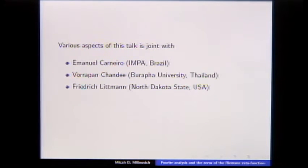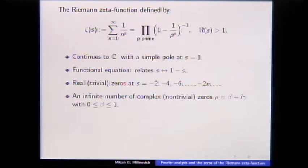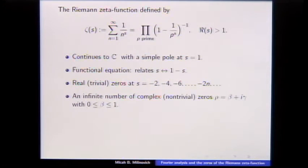I want to talk about some extremal problems that arise when you study the zeros of the Riemann zeta function. If you were here at the school last week, you saw a lot about the zeros of the zeta function. Let me just remind you: the zeta function can be written as a sum 1 over n to the s, or it has an Euler product, 1 minus 1 over p to the s inverse.